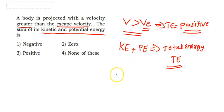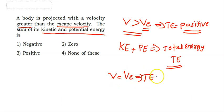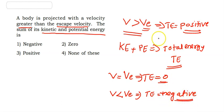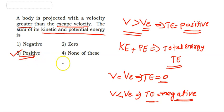There are three conditions: if velocity equals escape velocity, total energy is zero; if velocity is less than escape velocity (V < Ve), total energy is negative; if velocity is greater than escape velocity, total energy is positive. So our answer is option 3 — positive.